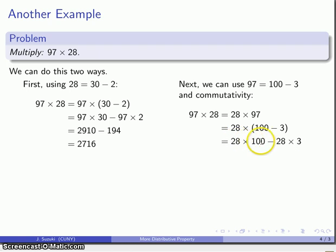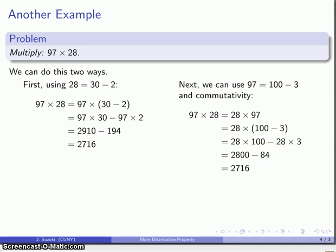And again, 28 times 100, really easy multiplication there. 28 times 3. Well, let's use the distributive property to think our way through this. That's 28 times 3, so that's 60 plus 24, so that's 84. And again, product 2800 minus 84 gives us 2716.